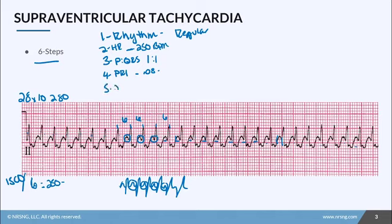Same with the QRS complex — that's how long it takes for the electricity to travel through the ventricles. Here we have one box, so 0.04 seconds. Again, because it's beating so fast, the electricity is going to take a lot less time. In step six, we identify our rhythm, which is SVT.